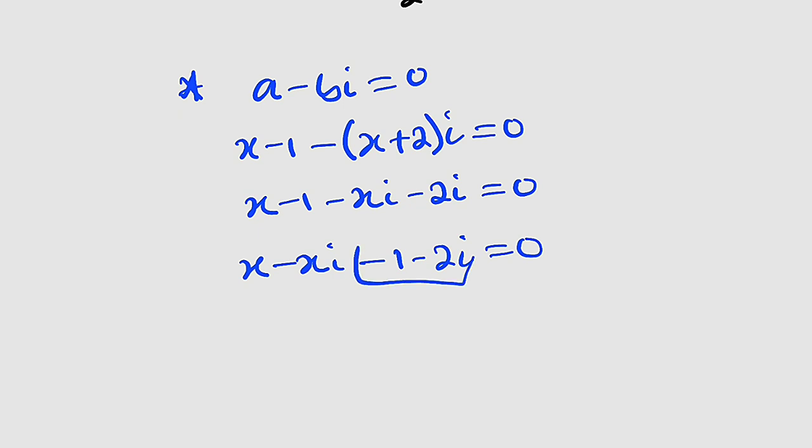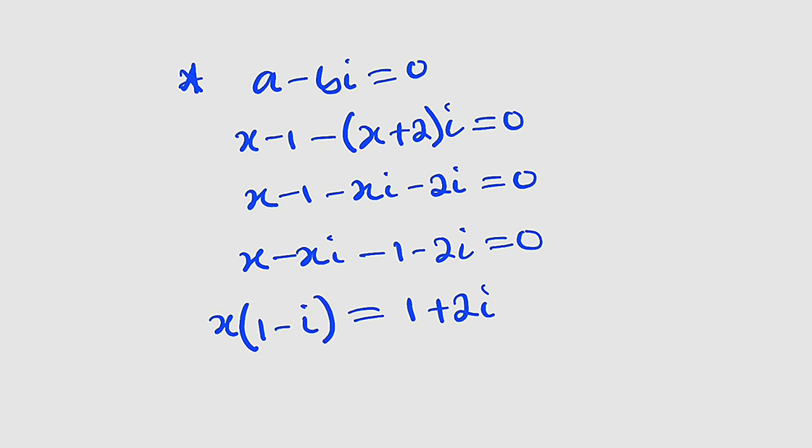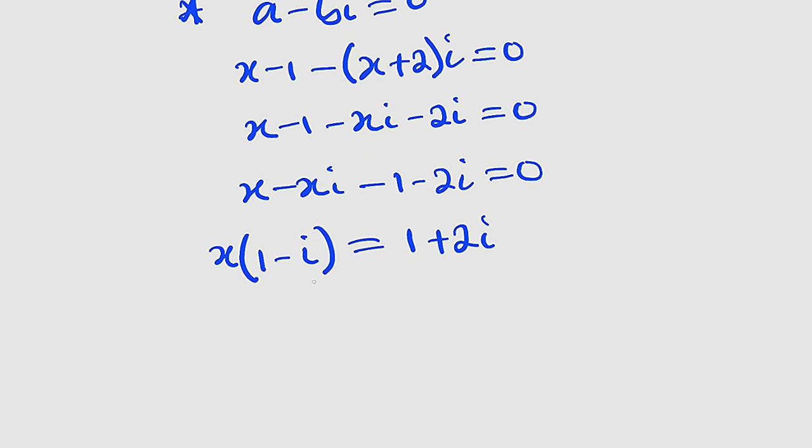Let us bring the x's together. We have x minus xi, then minus 1 minus 2i, equal to 0. I would like to take these two terms to the other side, which is going to transform them to positive 1 plus 2i. And the left-hand side, we have x in common. Bring the x outside. Inside, we have 1 minus i. Divide both sides by 1 minus i.